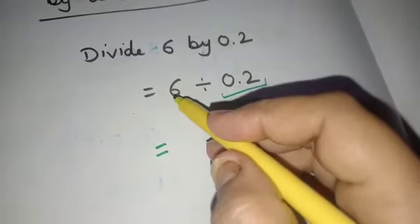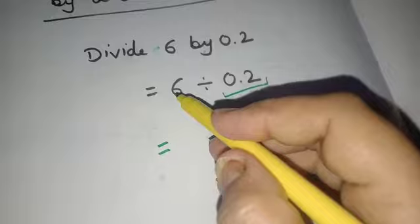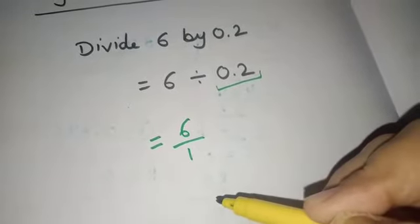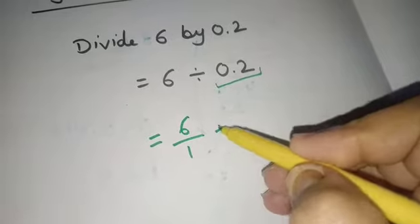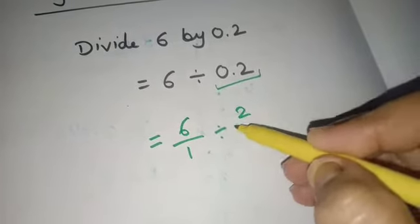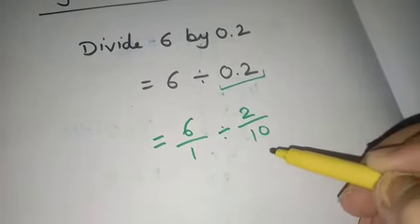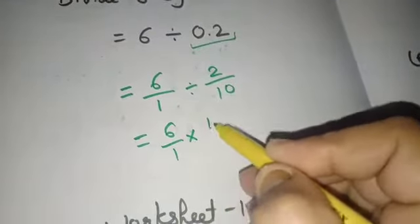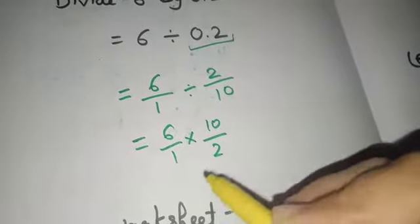6, there is no decimal, no point in the number, so it can be written as 6 by 1. And 0.2 when decimal will be removed it will be 2 by 10, and now division sign will be converted to multiplication 10 by 2.